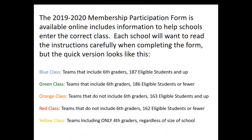The 2019-2020 membership participation form is available online and includes information to help you determine your correct class. Blue class teams include sixth graders for large schools — 187 eligible students and up. Green class includes sixth graders, 186 and fewer. Orange class does not include sixth graders, 163 eligible students and up. Red class does not include sixth graders, 162 eligible students or fewer. Yellow class teams only have fourth graders on them, regardless of school size.